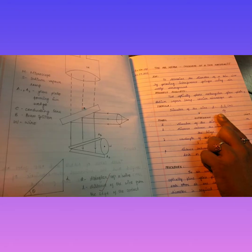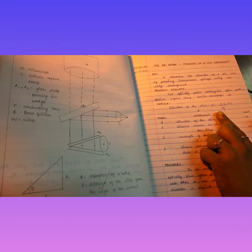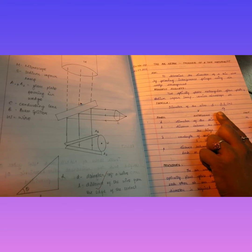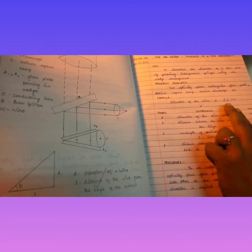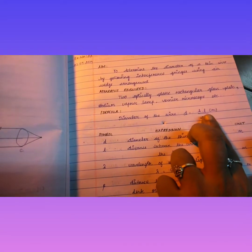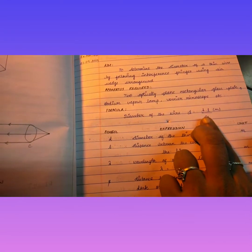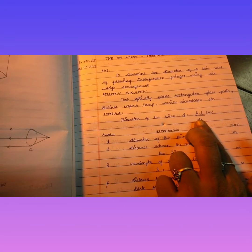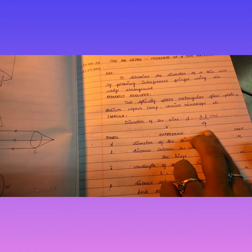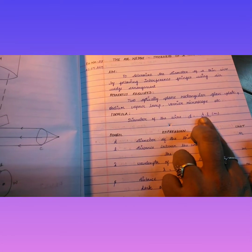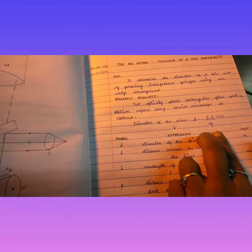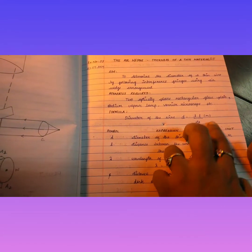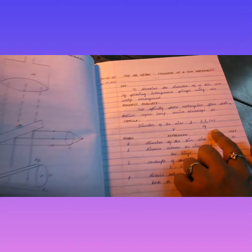Instead of thin wire we can use hair also. By using the air wedge experiment we can measure the thickness of a thin wire or thin hair. L is the distance between the band and the thin wire placed between the glass plates. Lambda is the wavelength of the source used in this experiment, and beta is the bandwidth of the fringes obtained. By using this formula we can measure the thickness of the thin material.